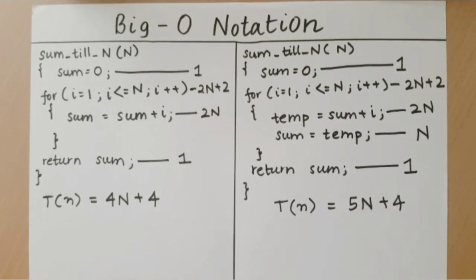As you can see, when we count the primitive operations to arrive at the time taken by the algorithms, the time changes with any slight change in implementation.